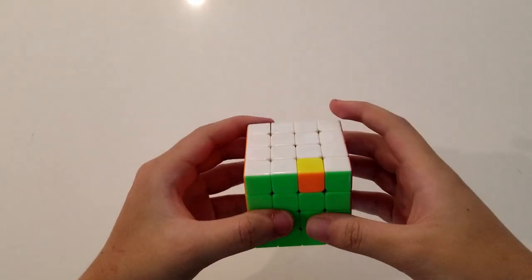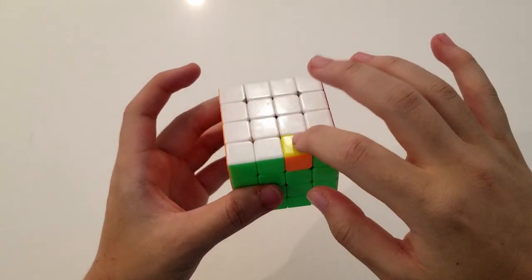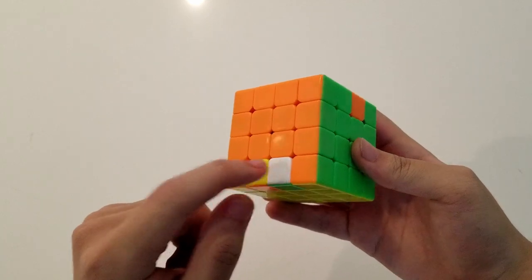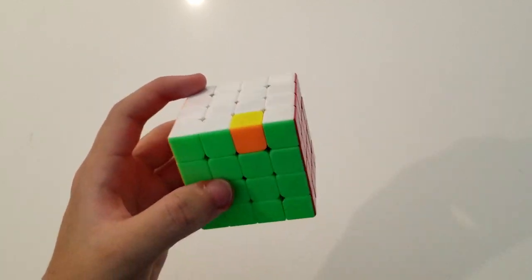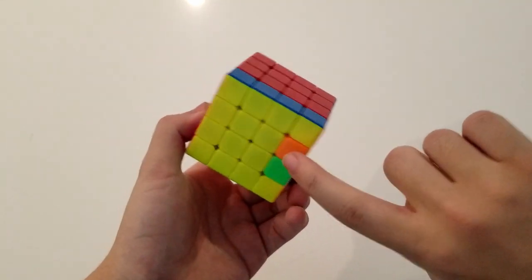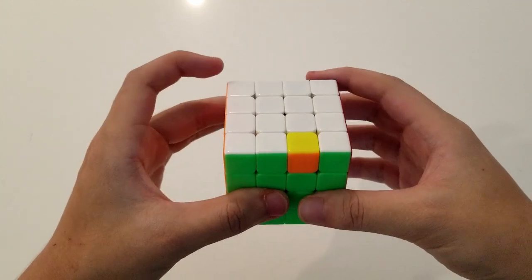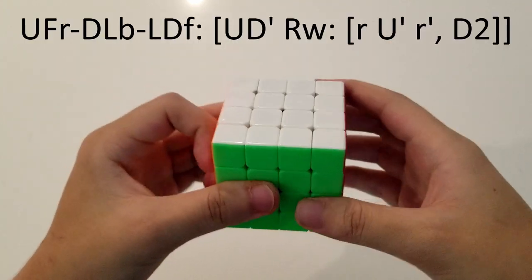This case and its inverse follow the exact same concept. We have UFR to DLB to LDF. And you essentially just do a D', put these in DB, and it's the same outcome there. Just like that.